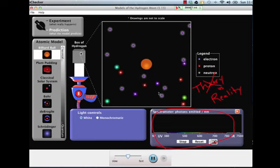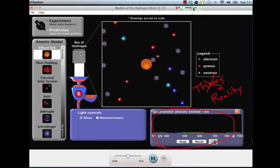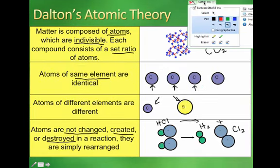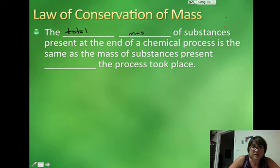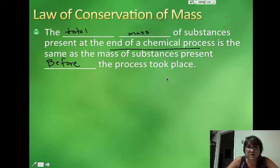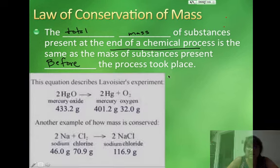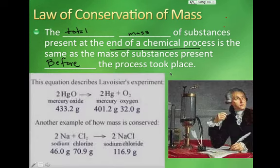But there were some important aspects of Dalton's theory that we want to be sure to address. For example, the law of conservation of mass. The law of conservation of mass says that the total mass of substances that are present at the end of a chemical process is exactly the same as the mass of substances present before the process took place. This law is still one of the guiding principles of all of science, not just chemistry, but also physics as well, and biology too.